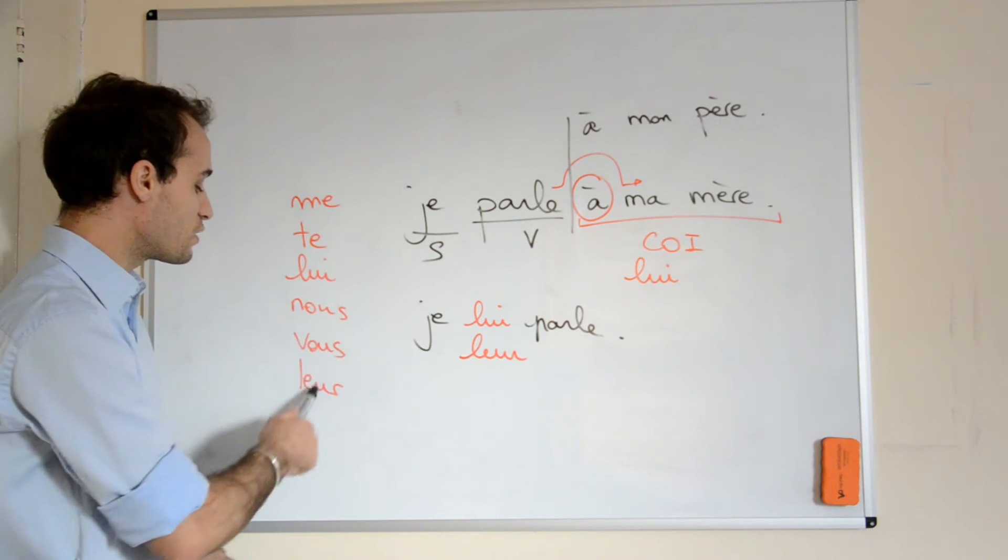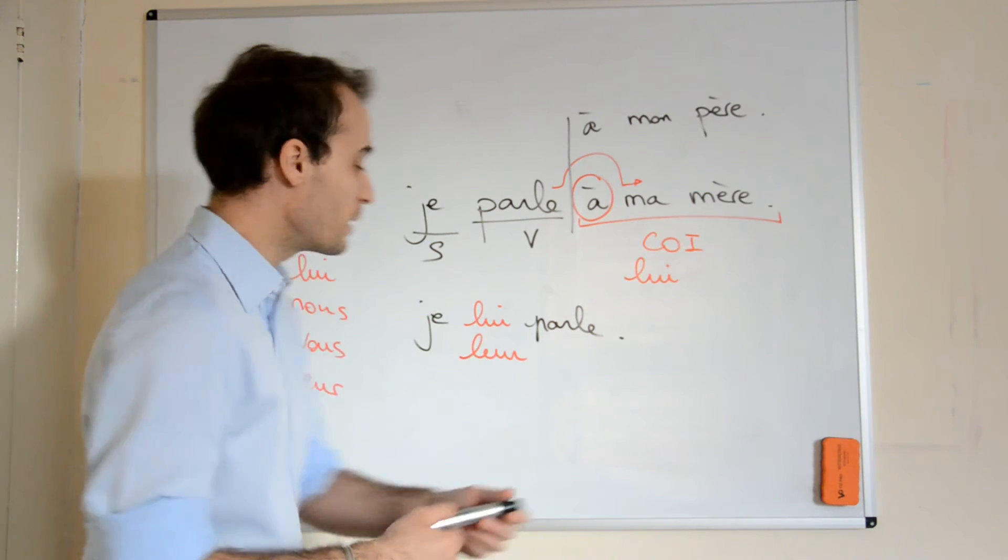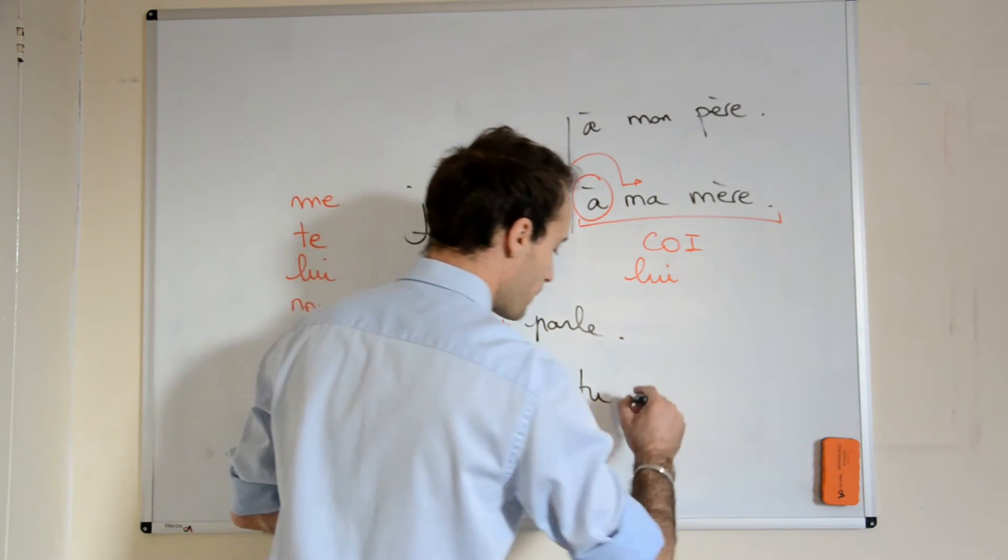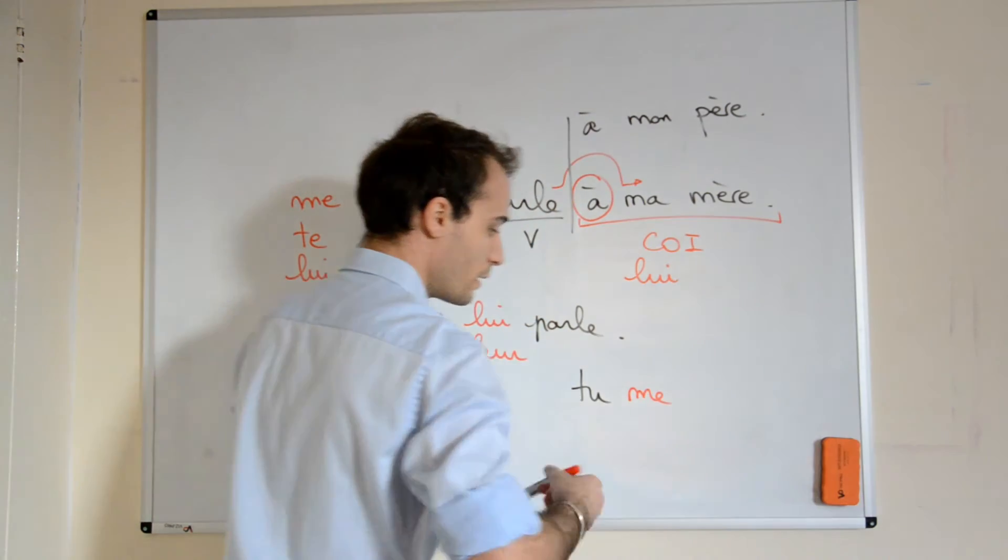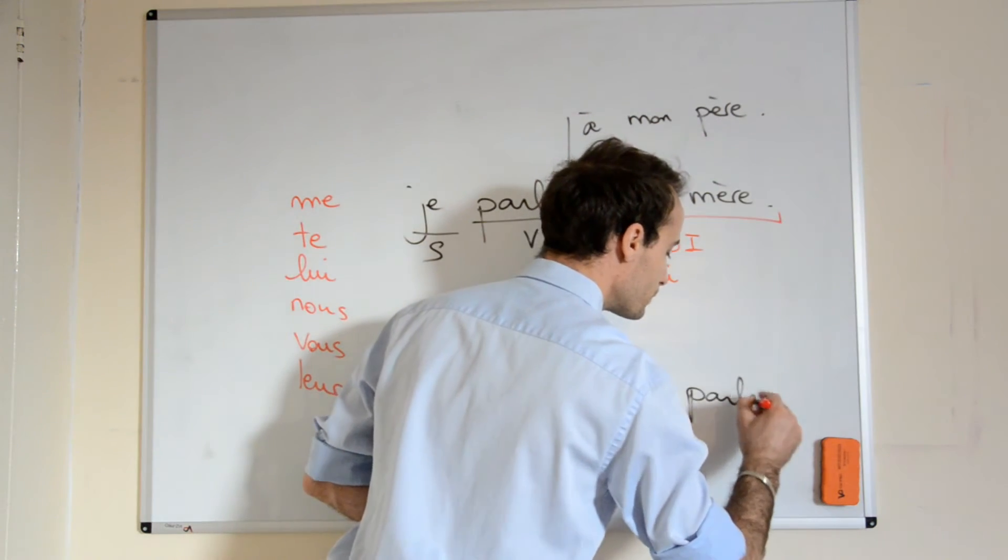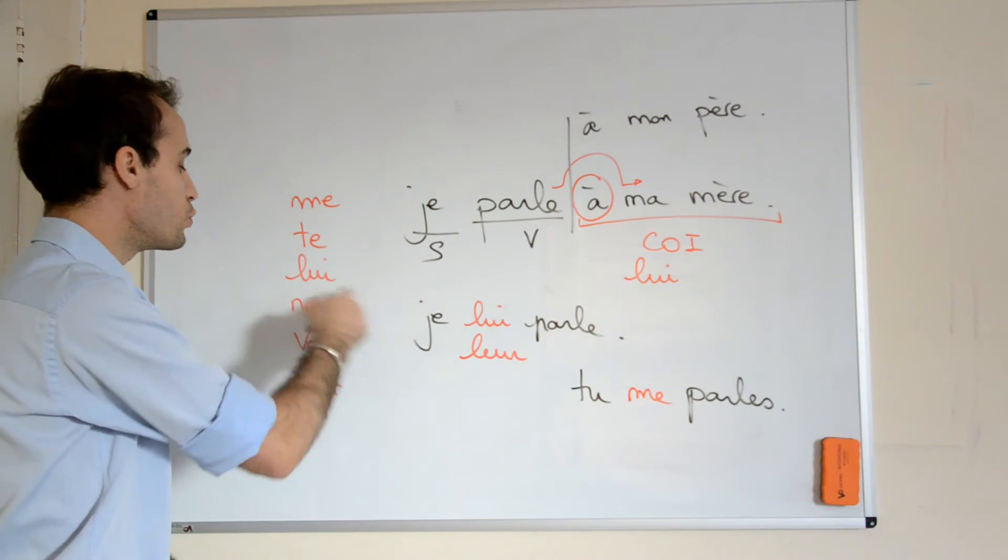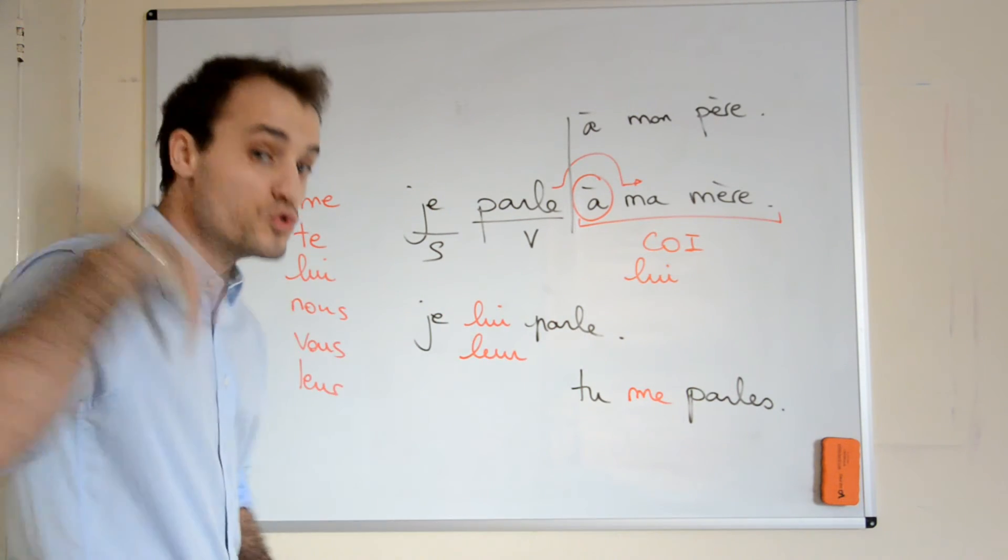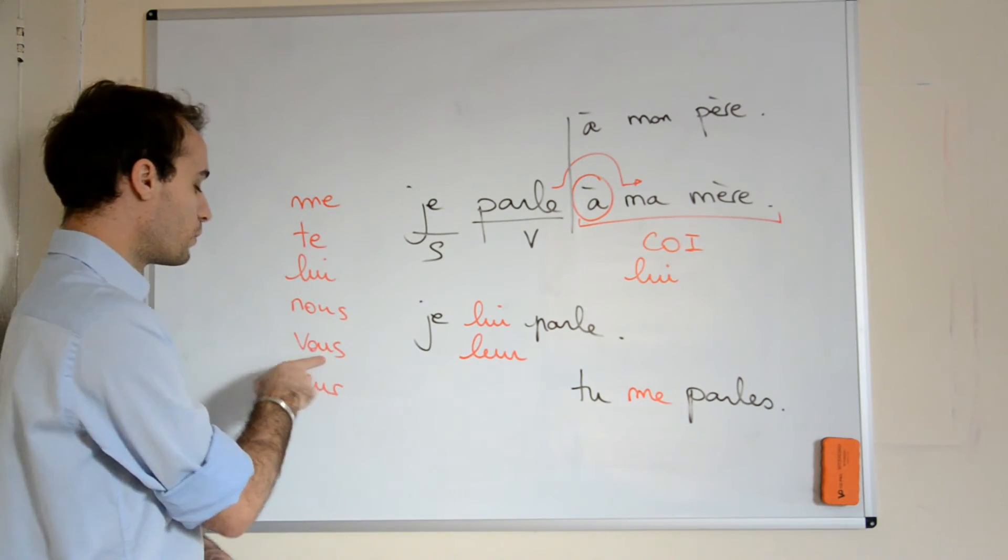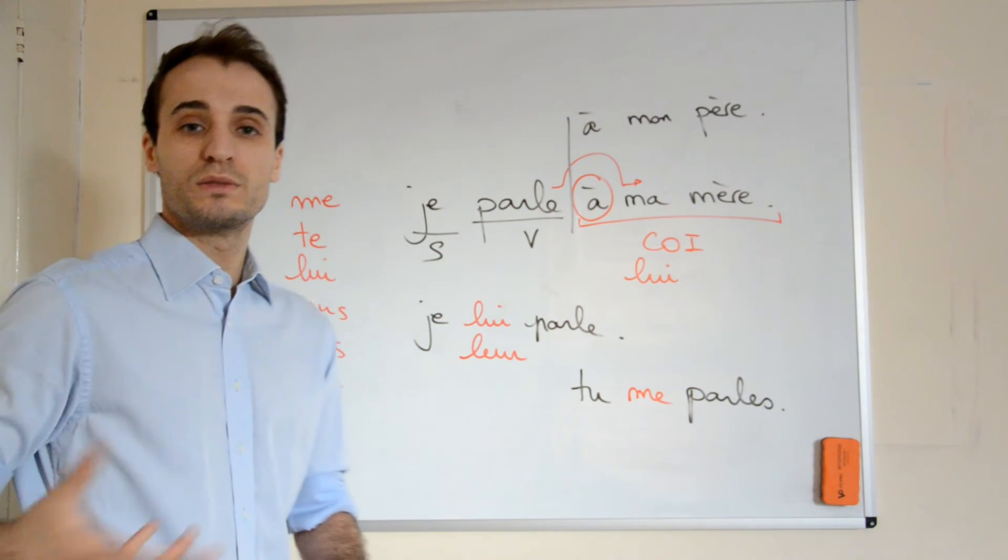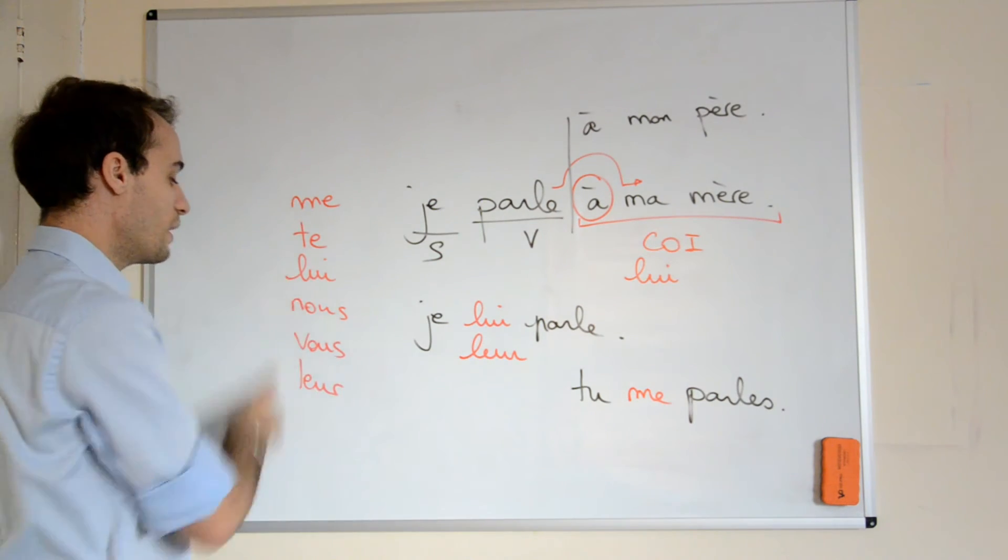So this is the list you'll have to use. If you want to say, you speak to me, that would become tu me parles. So tu me parles, je te parle, je lui parle, vous nous parlez, nous vous parlons, we speak to you. And je leur parle, I speak to them.